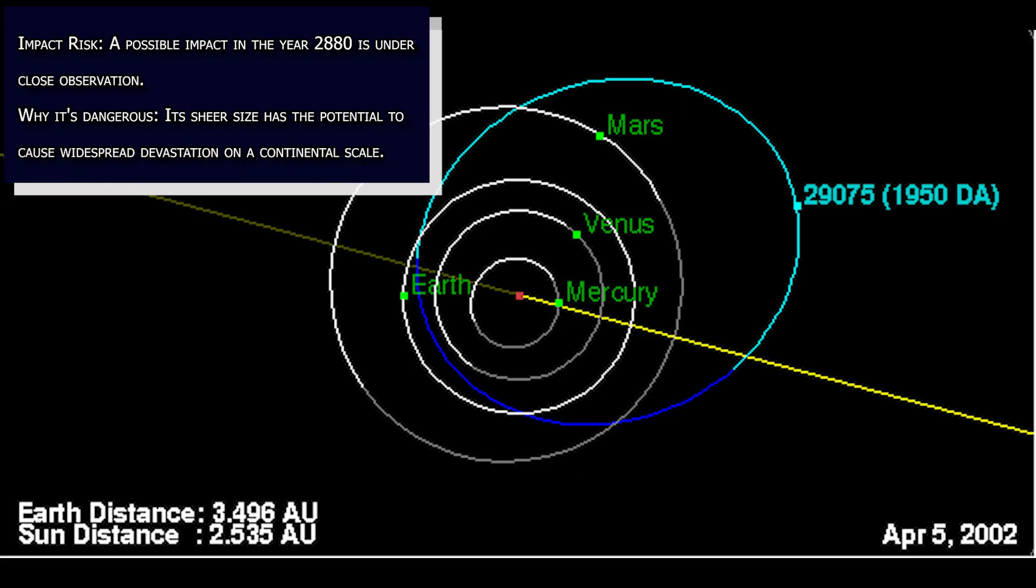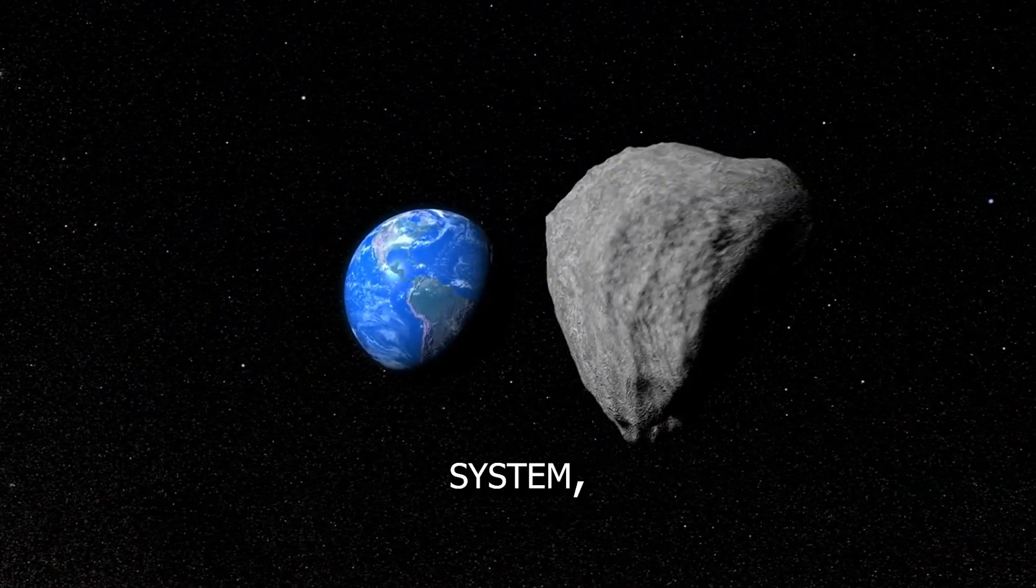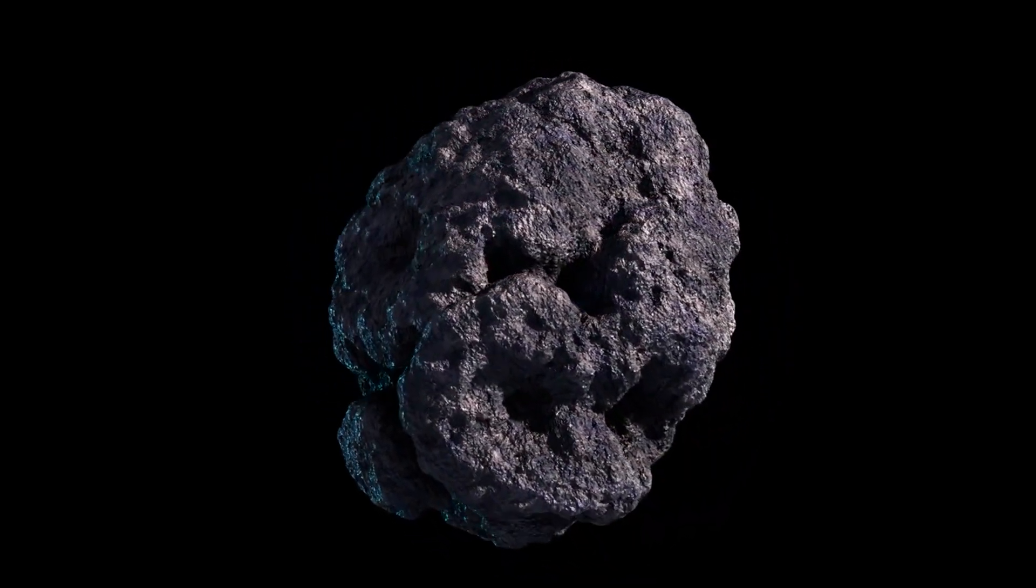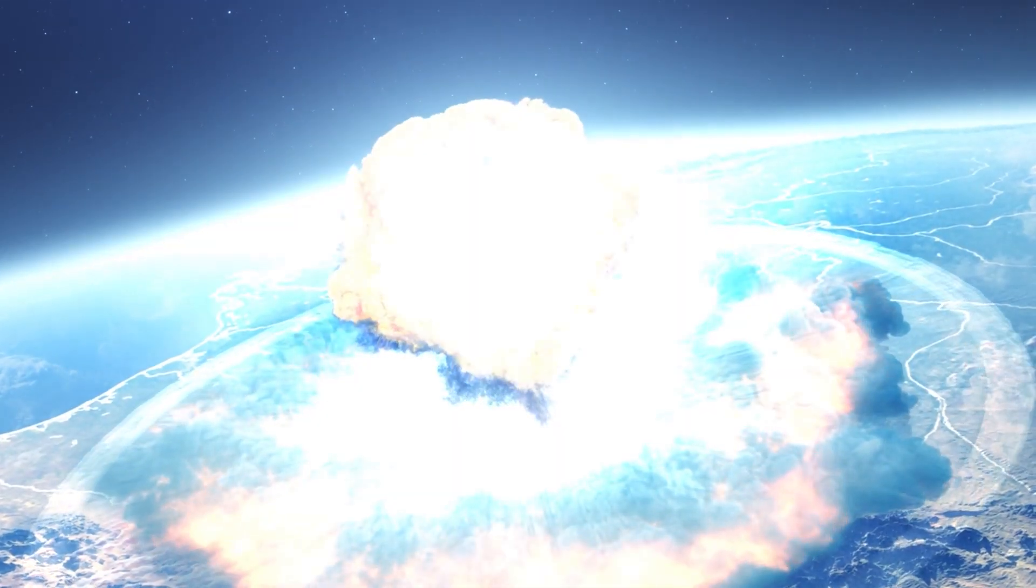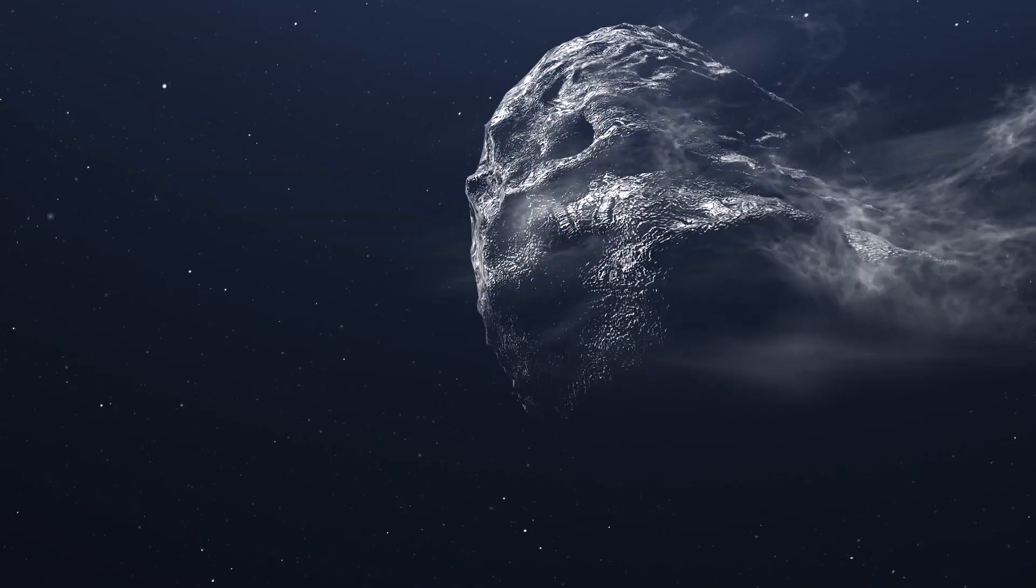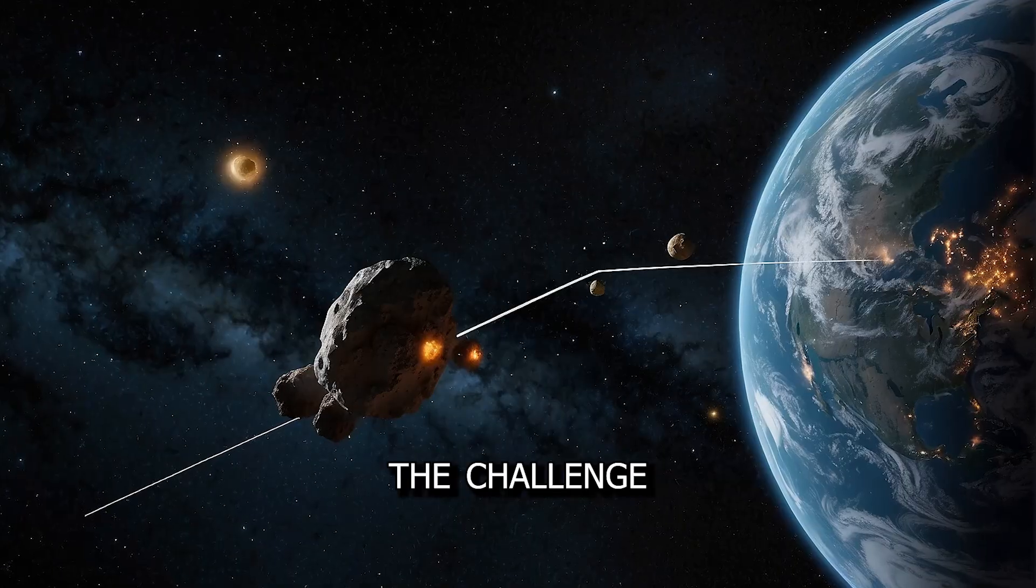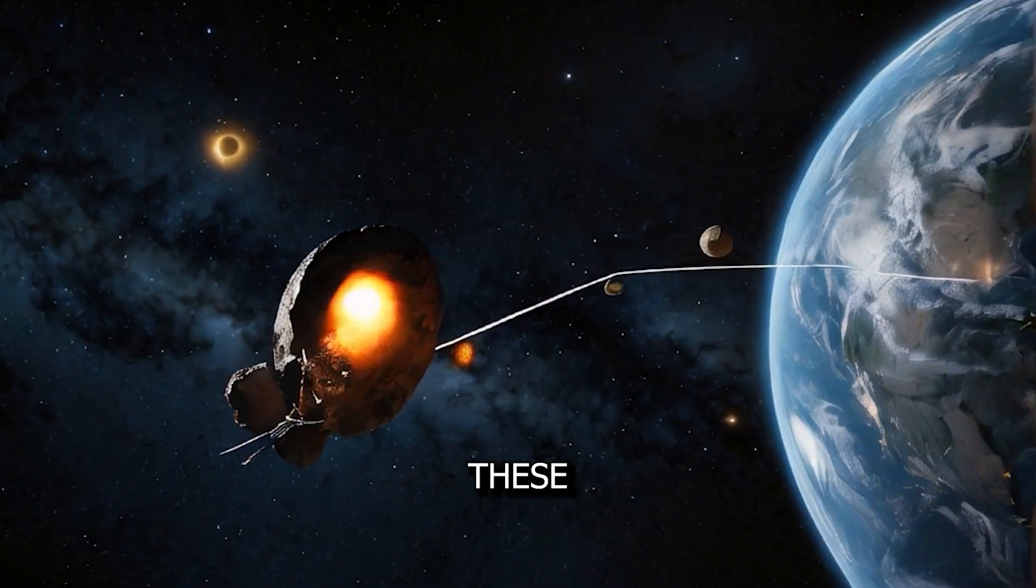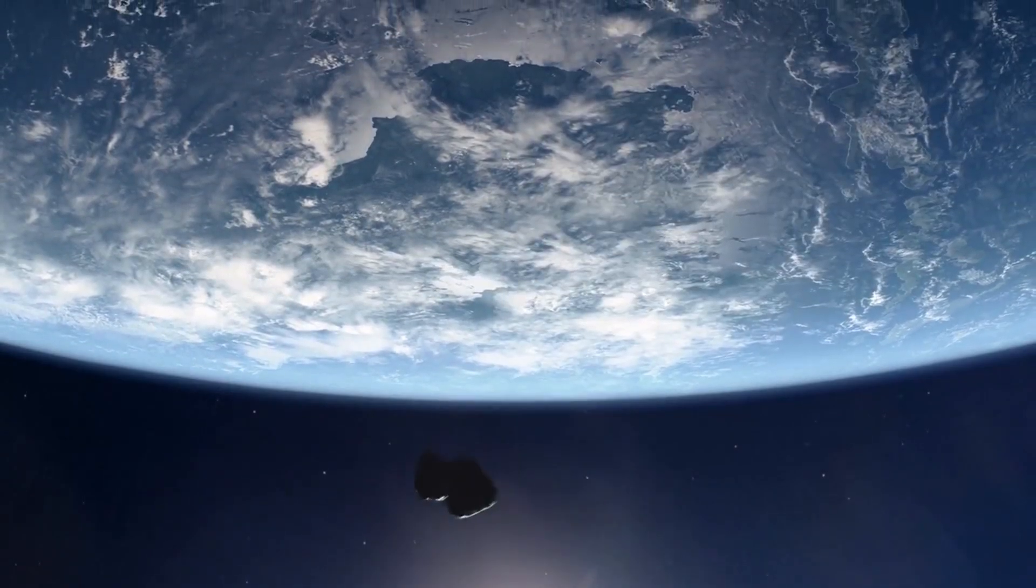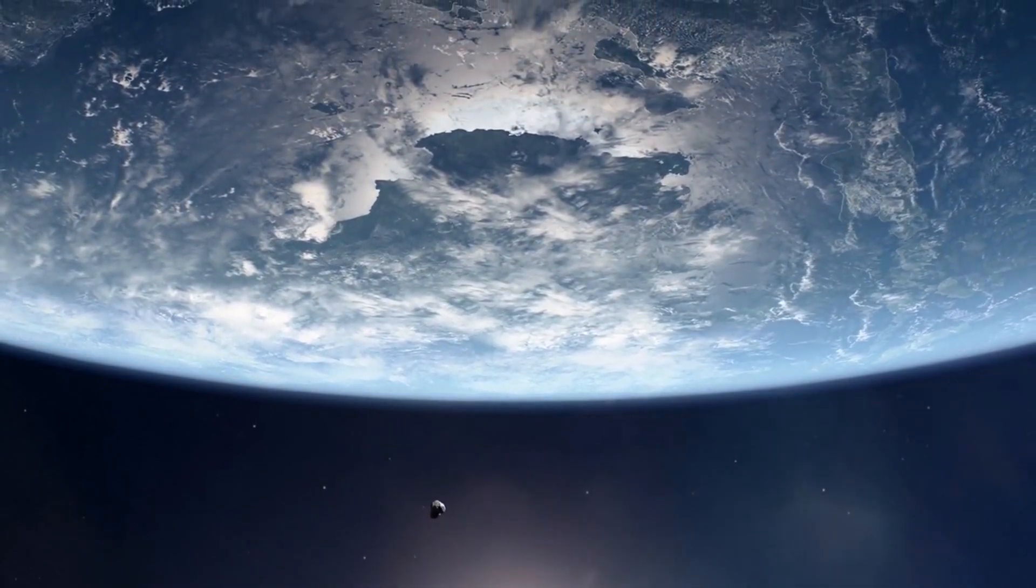Number one, 29075, 1950 DA, the most planet-threatening near-Earth object in our solar system. A behemoth at a staggering 1.3 kilometers or 4,265 feet in diameter, this asteroid has the potential to cause widespread devastation on a continental scale. Initially lost after its discovery in 1950 and rediscovered in 2000, it highlights the challenge of tracking these cosmic wanderers. While the chances of impact in the near future are low, 1950 DA's possible collision in the year 2880 poses a unique challenge.